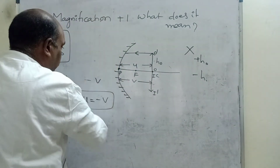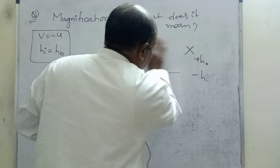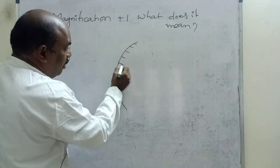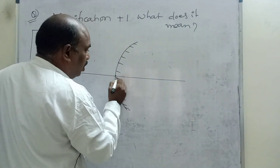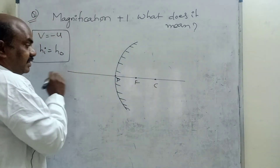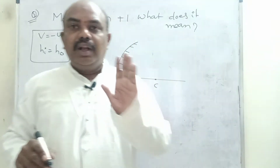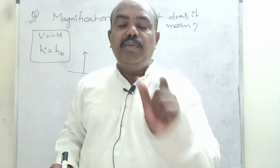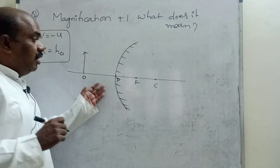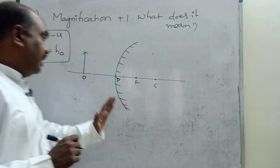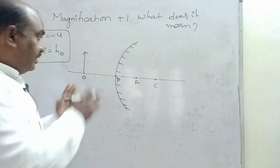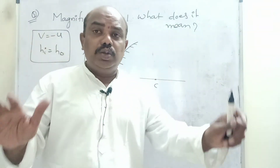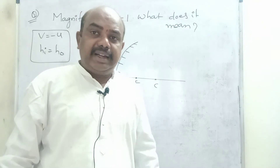Now we will check the convex mirror. This is a curved surface with silver mercury amalgam inside. This is the principal axis, pole, focus, and center of curvature. In a convex mirror, the pole, focus, and center of curvature lie on the non-reflecting side. You can place the object anywhere on the principal axis on the reflecting side. The reflecting side is in front of the mirror.